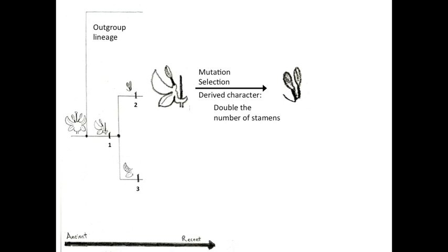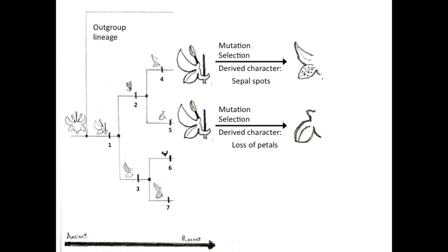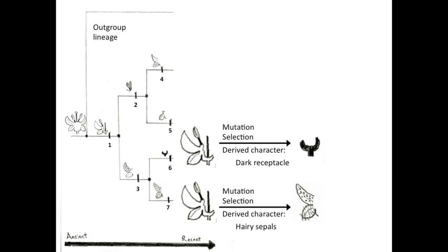The lineages continue to evolve independently, with mutation creating new character states such as doubling the number of stamens and mutation resulting in spots on petals. As time passes, the populations split more, creating more lineages which evolve independently, with mutation creating new character states such as spots on sepals or the loss of petals. In other lineages, mutation creates different character states such as a darkened receptacle or hairs growing on the sepals.